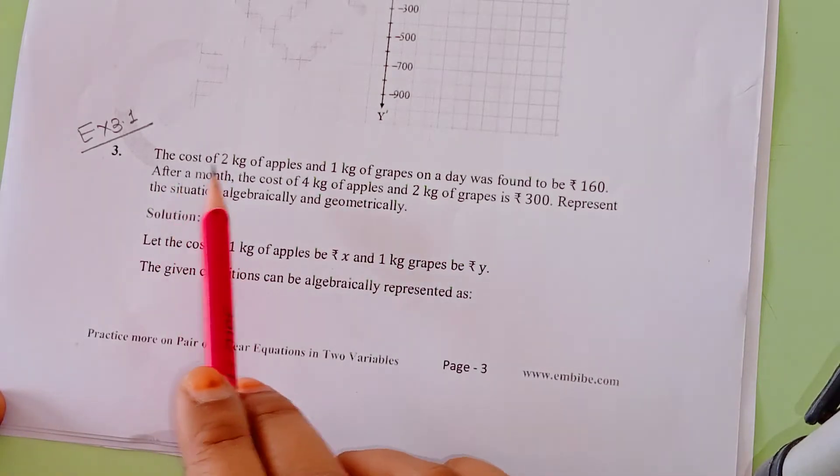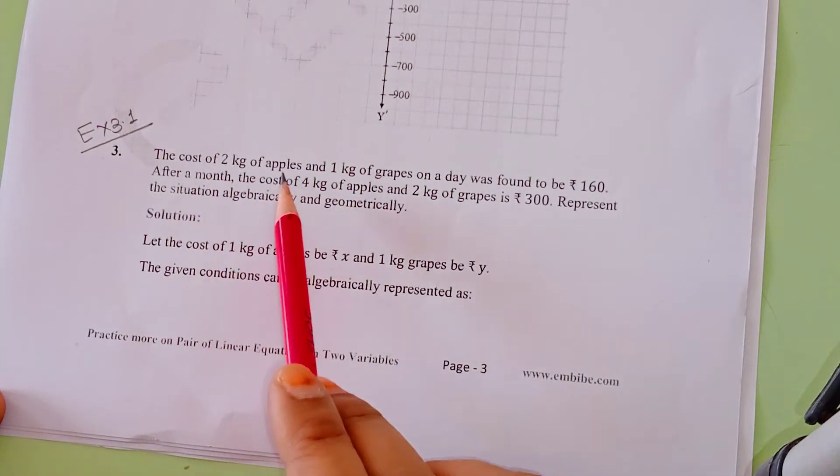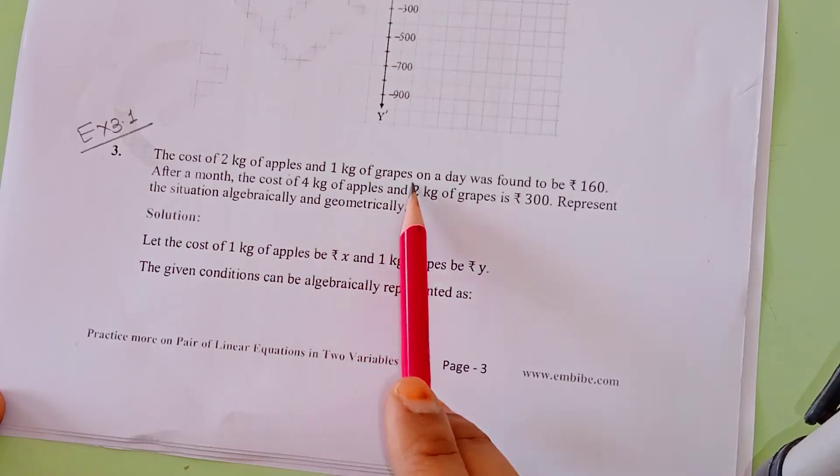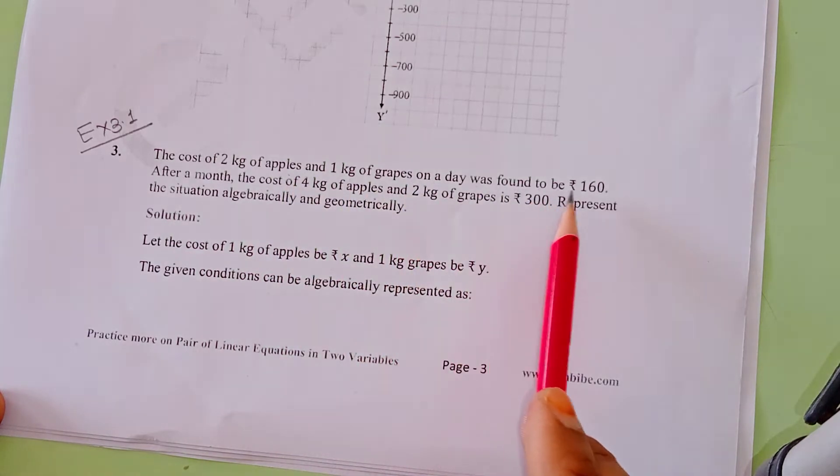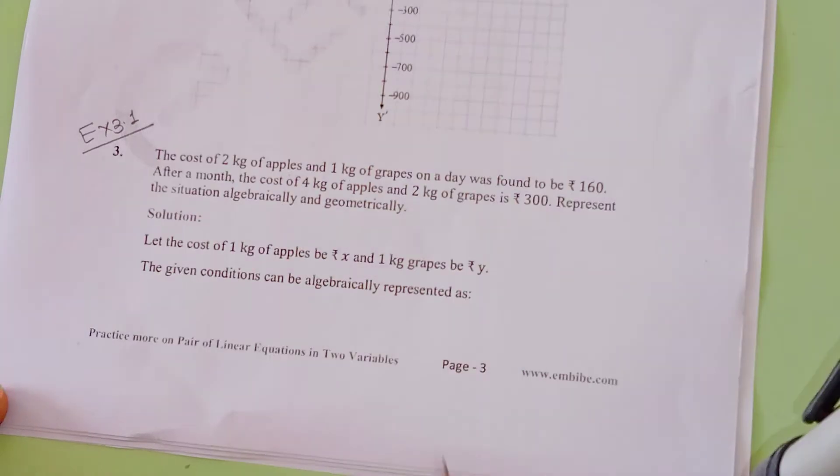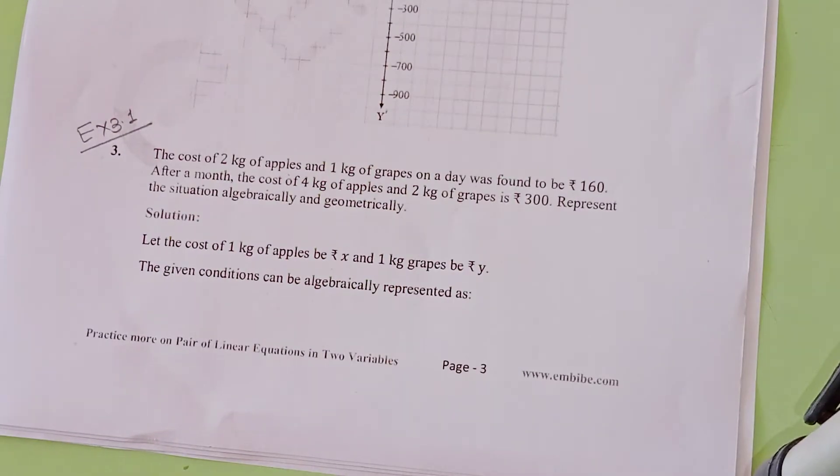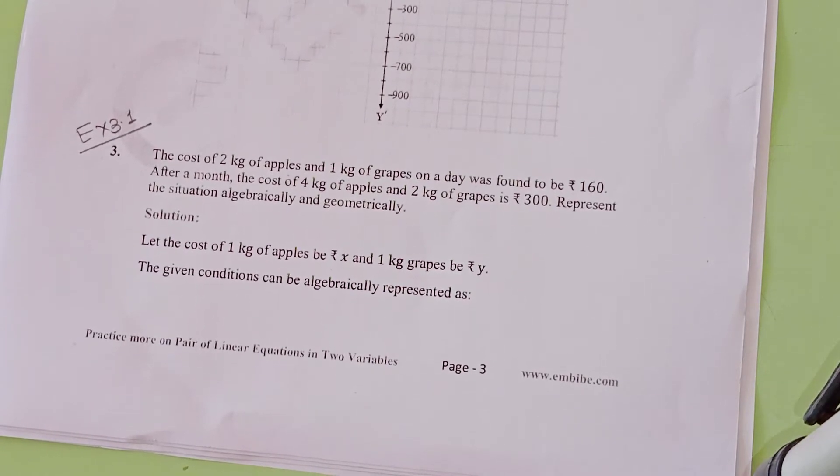Question number 3: The cost of 2 kg of apples and 1 kg of grapes on a day was found to be Rs. 160. Here we have told that if we have 2 kg of apples and 1 kg of grapes, its total cost is Rs. 160.